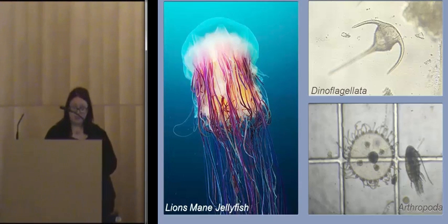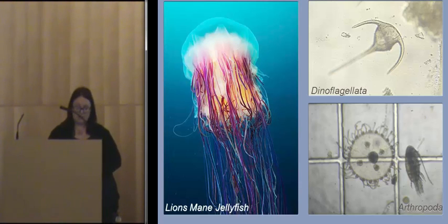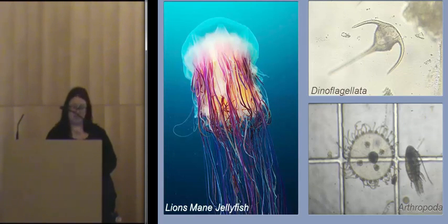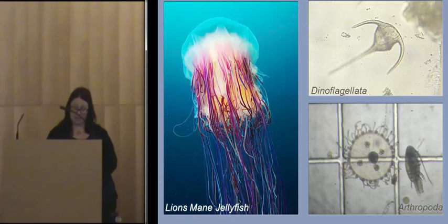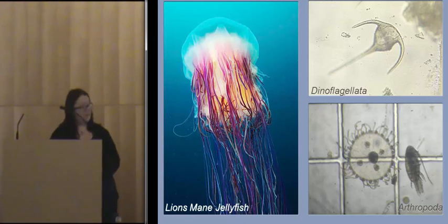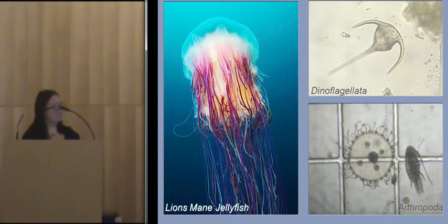The word plankton originally derives from the Greek word 'plantos', meaning to drift or wander. In the case of plankton, this is accurate — plankton are unable to swim against the current, meaning they are at the mercy of any physical processes that occur within the ocean.